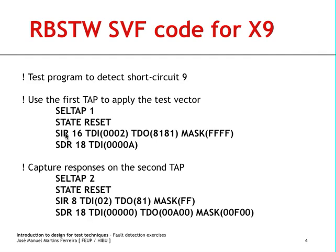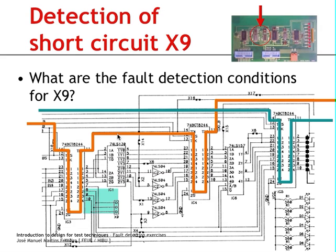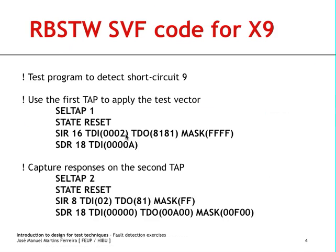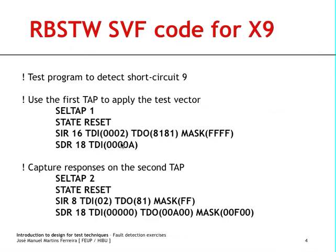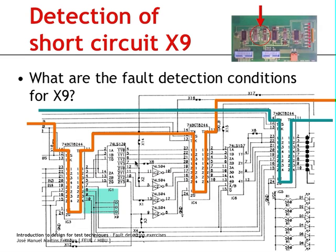And once we have done so, we are in the position to scan through the instruction registers and send in 16 bits, which comprise the two instructions for these two devices. So 0002 sets this device to external test, and 8181 sets this device to sample preload.